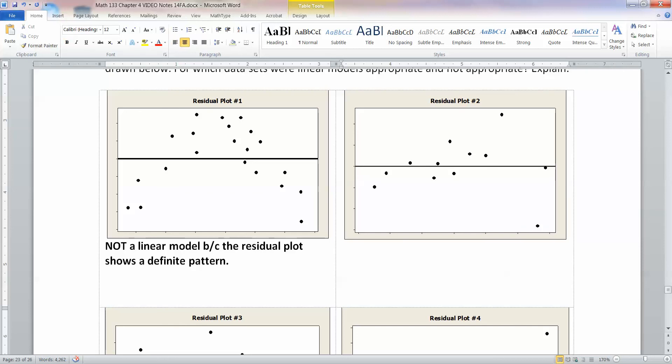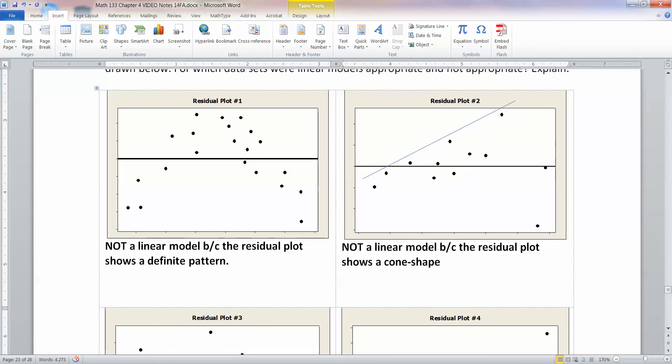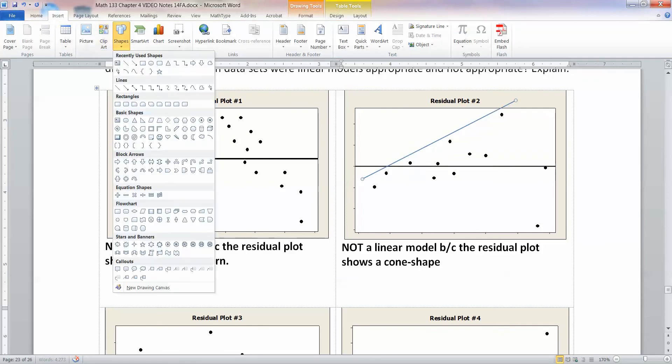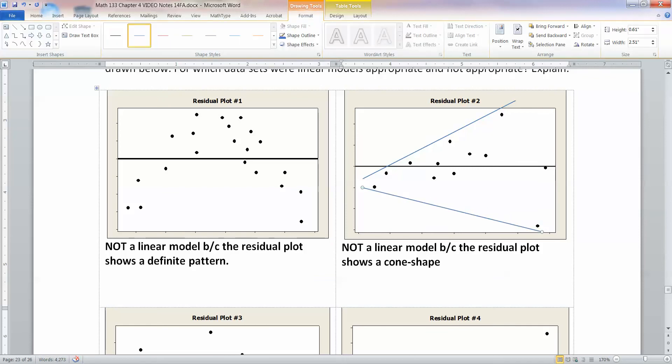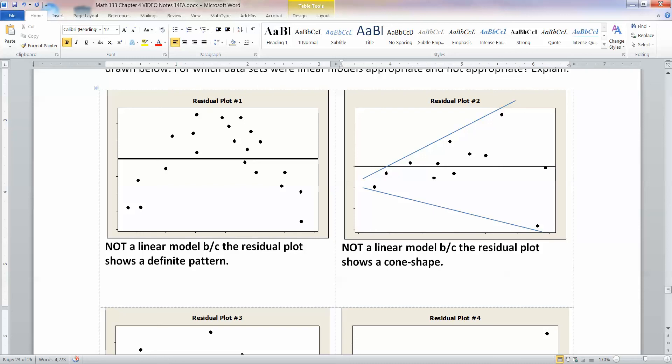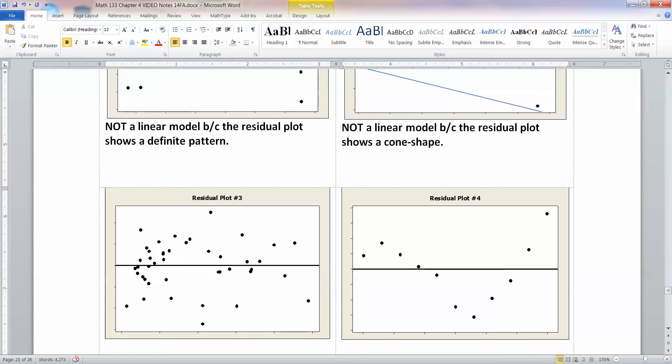And for residual plot two, that one is also not a linear model, not because it shows a pattern, but because it shows a cone shape. Can you see the cone kind of here? So you can kind of see it starts like this and then goes out from there. So it's getting wider and wider and wider as we go. So that's a cone shape. That is not a linear model appropriate. So, again, if you see a pattern, no good. If you see a cone shape, no good. If you see somebody threw up all the points all over the place, that's good. You want it to look random. You do not want it to look like it has a pattern or a cone.